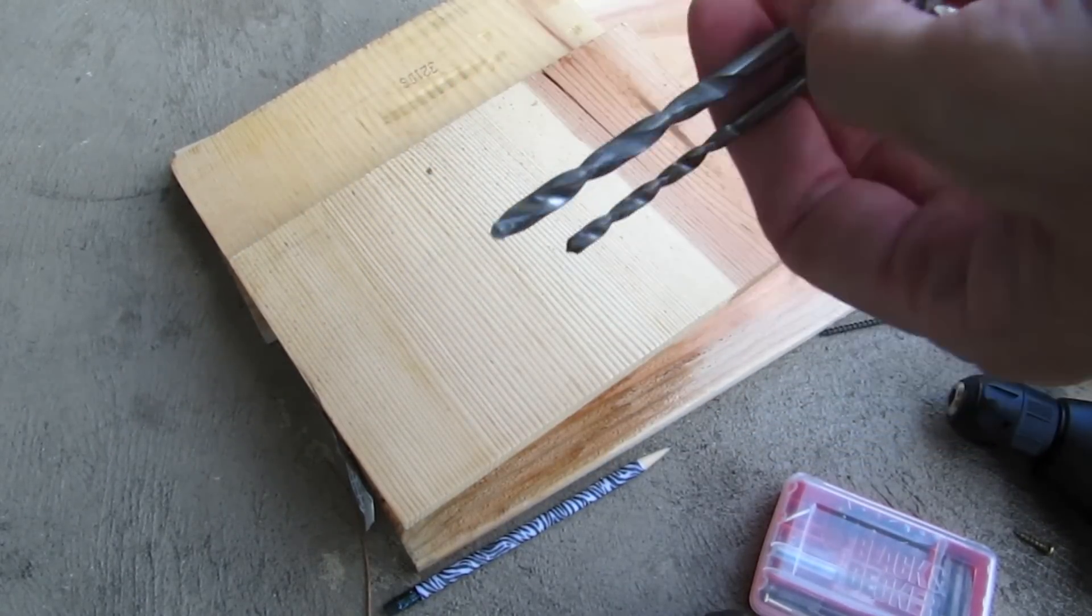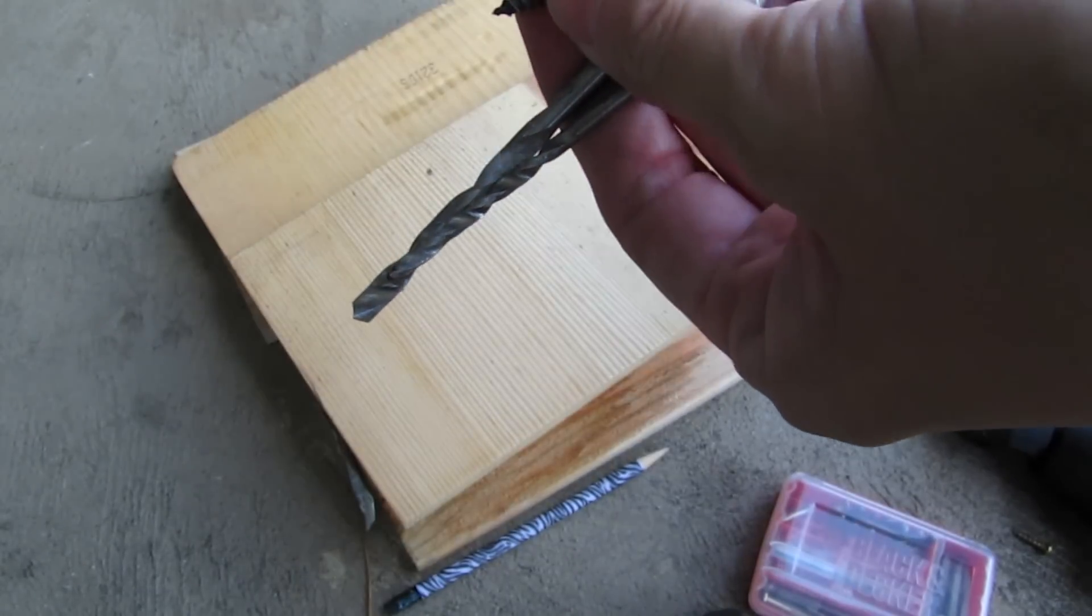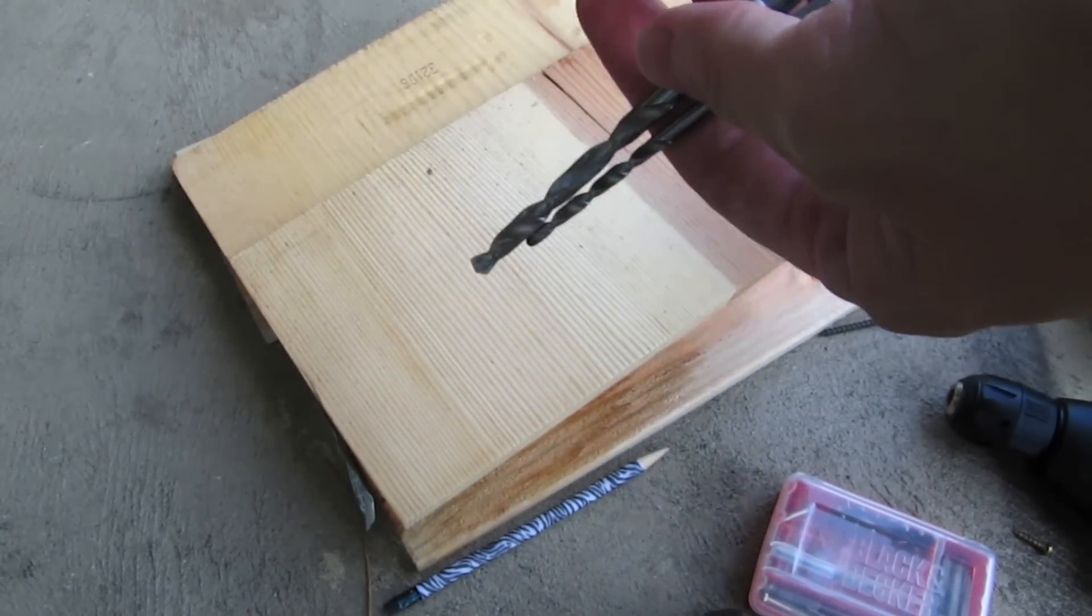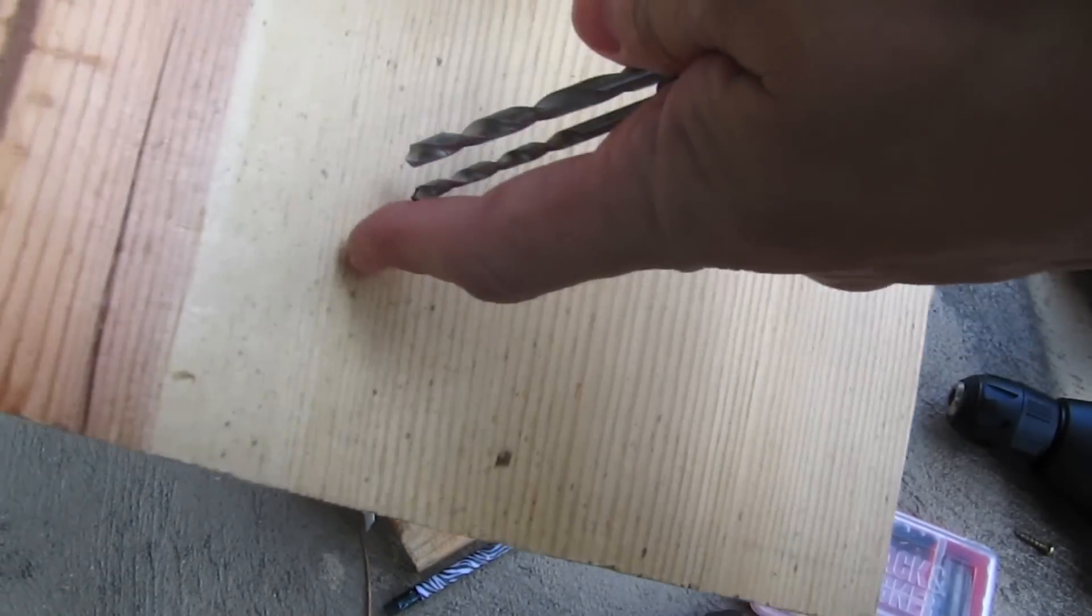Now the reason why we use a drill is if you just try to crank this screw into a piece of wood, sometimes you'll just split it like that and that's what you want to avoid.